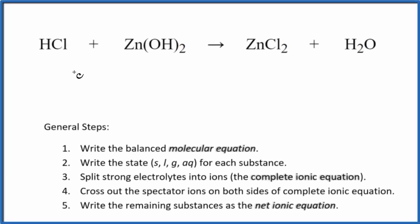In this video, we'll write the balanced net ionic equation for HCl plus Zn(OH)2. This is hydrochloric acid. This is zinc hydroxide.